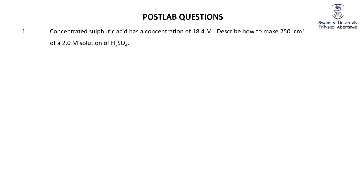So now the post lab. First thing, let's practice our dilutions. Concentrated sulfuric acid has a concentration of 18.4 molarity or moles per cubic decimeter. Describe how to make 250 cubic centimeters of a two molar solution of H₂SO₄.